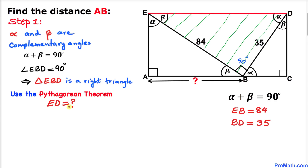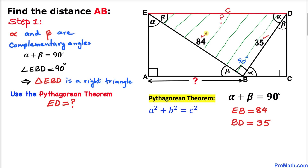Since triangle EBD is a right triangle, we use the Pythagorean theorem to calculate side length ED. The Pythagorean theorem states a² + b² = c². Here ED is the hypotenuse. So ED² equals 35² plus 84².